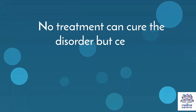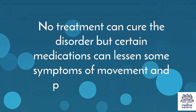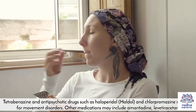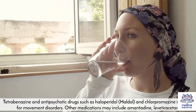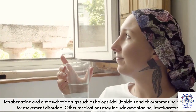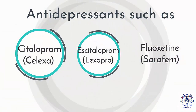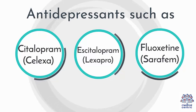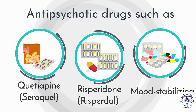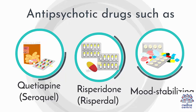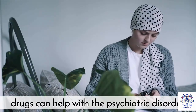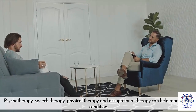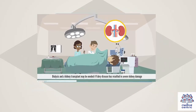Treatment: No treatment can cure the disorder, but certain medications can lessen some symptoms of movement and psychiatric problems. Tetrabenazine and antipsychotic drugs such as haloperidol and chlorpromazine may help for movement disorders. Other medications may include amantadine, levetiracetam, antidepressants such as citalopram, escitalopram, or fluoxetine, and antipsychotic drugs such as quetiapine or risperidone. Mood-stabilizing drugs can help with psychiatric disorders. Psychotherapy, speech therapy, physical therapy, and occupational therapy can also help manage the condition.